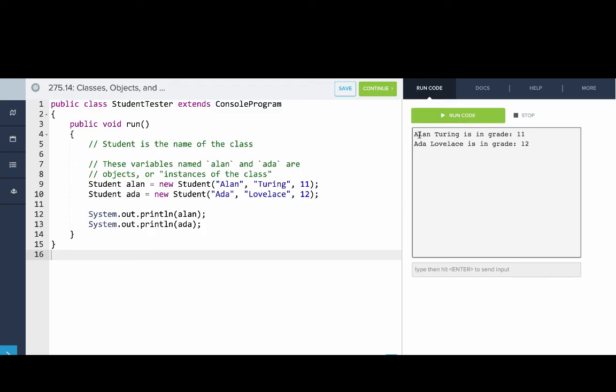There you go, you can see that when we run it, it prints out some information about both of the objects. Now let's take a look at the rectangles program.